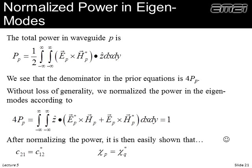To simplify the equations, we normalize the power in the modes. The total power in a waveguide is described by a specific integral, and we notice the denominator of the coupling coefficients is four times that power. By normalizing the eigenmodes by that constant, the ugly denominator disappears. Once normalized, interesting symmetry emerges: the butt coupling coefficients have complex conjugate symmetry, and the change in propagation constant also shows symmetry between waveguides.